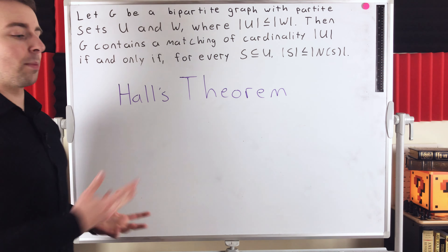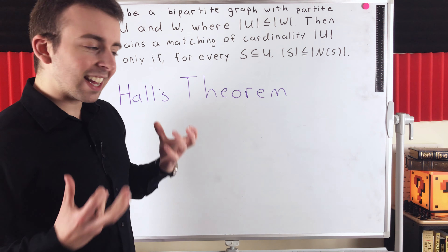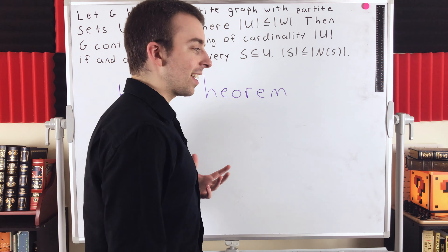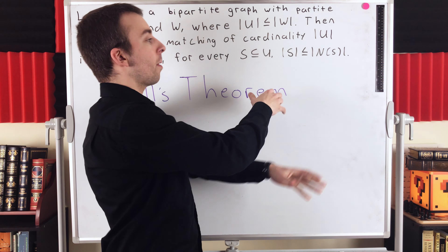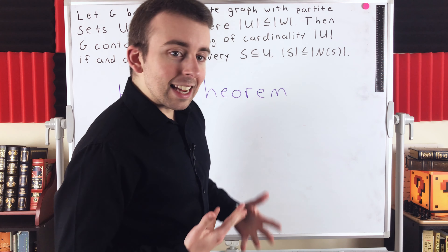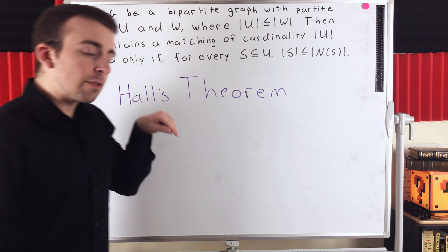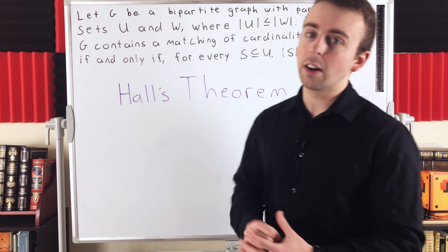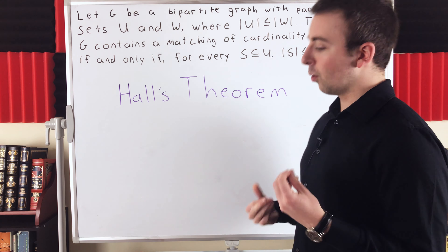What this theorem tells us is that we'll be able to find a matching that covers the smaller partite set if and only if every single subset of the smaller partite set has sufficiently many neighbors in the other partite set to match those vertices up. If you need an introduction to matchings or more background on this theorem, I'll leave links in the description to my lesson on matchings and my lesson introducing Hall's theorem.